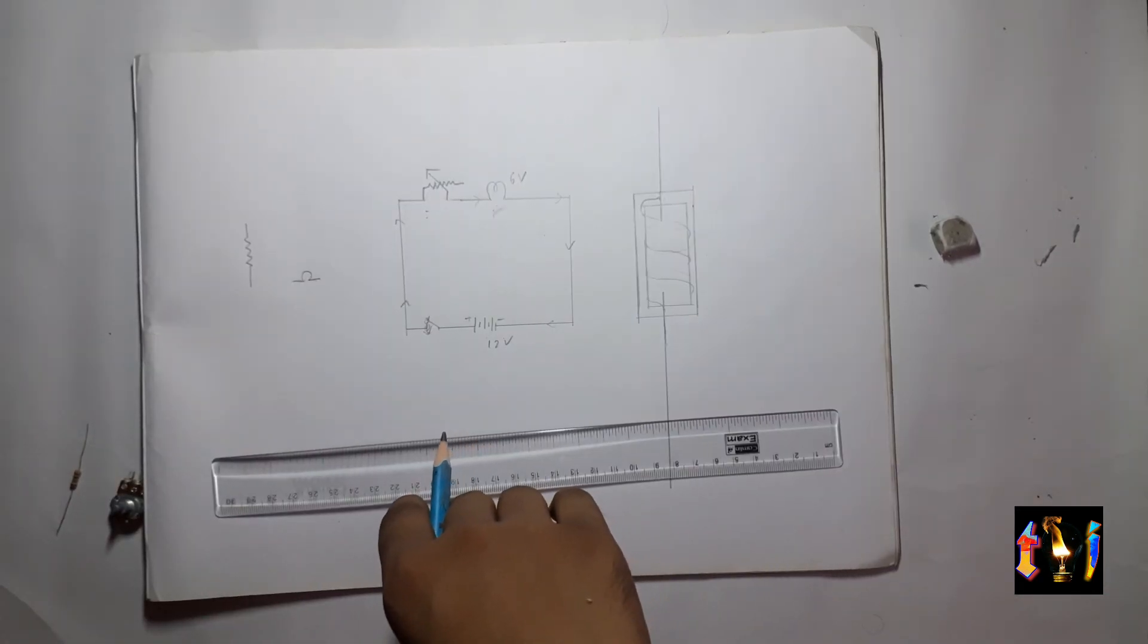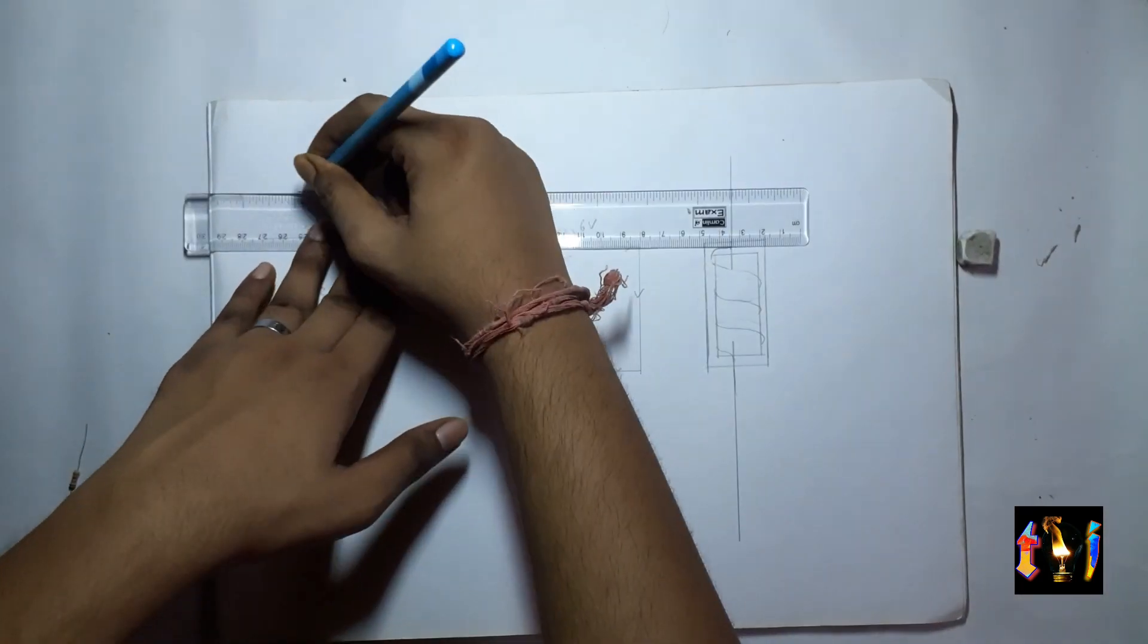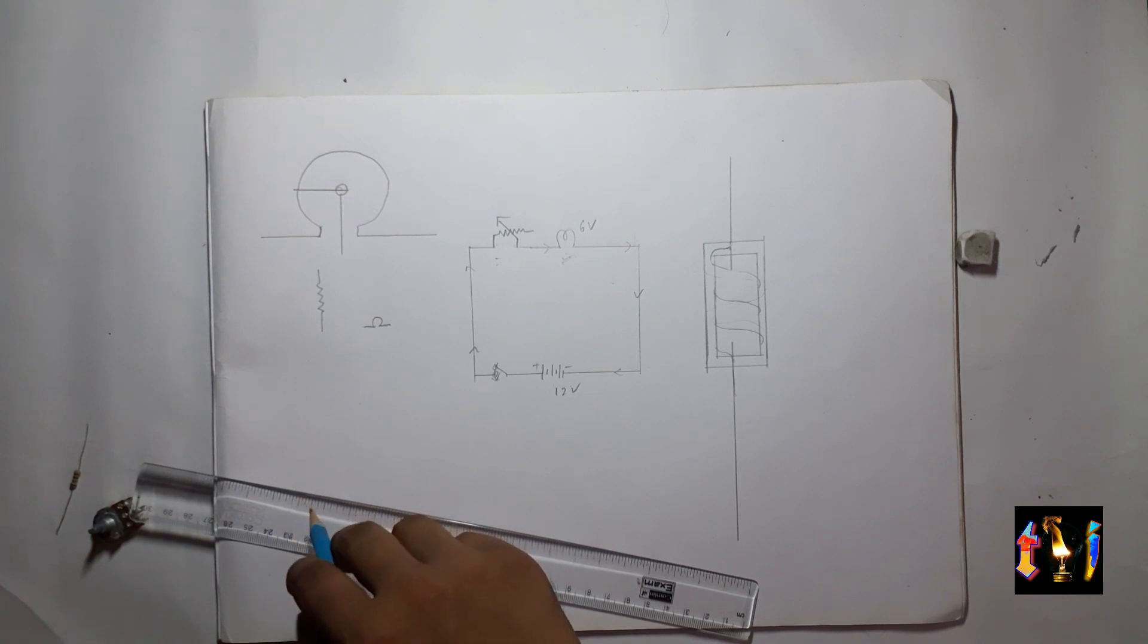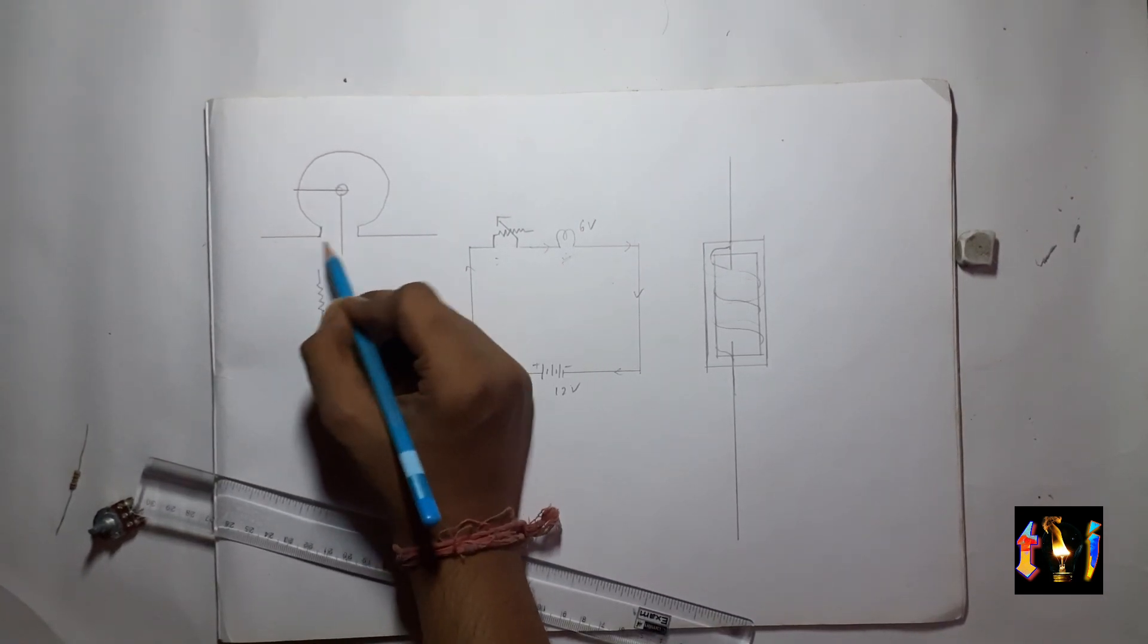Now what's inside a variable resistor. Variable resistor looks like this from the inside. These are its three terminals.